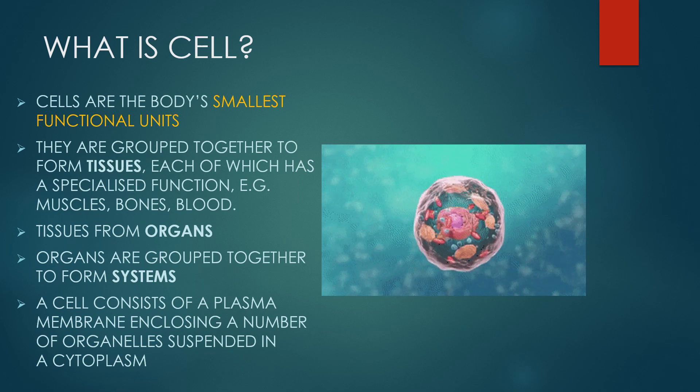Cells are the body's smallest functional units. They are grouped together to form tissues, each of which has a specialized function like muscles, bones and blood. Tissues form organs. Organs are grouped together to form systems. A cell consists of a plasma membrane enclosing a number of organelles suspended in the cytoplasm.